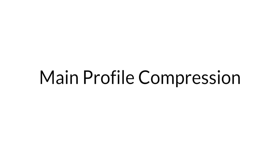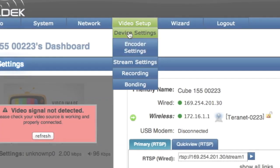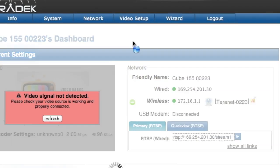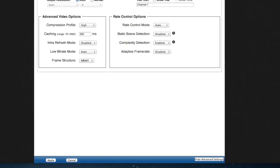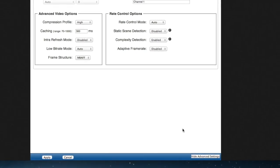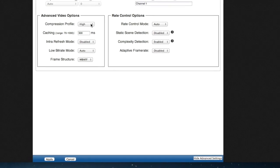Use main profile compression when streaming to a CDN. You can find this under Video Settings, Encoder Settings, Advanced Settings, Compression Profile.